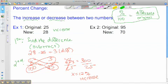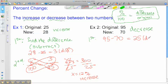So this next example, this time it went from 95 to 70. We are looking at a decrease. Again, the first thing we do is find the difference. We are going to do 95 minus 70. Notice I still just took the bigger number, subtracted the smaller number, and I got 25. That is my difference between the two numbers.